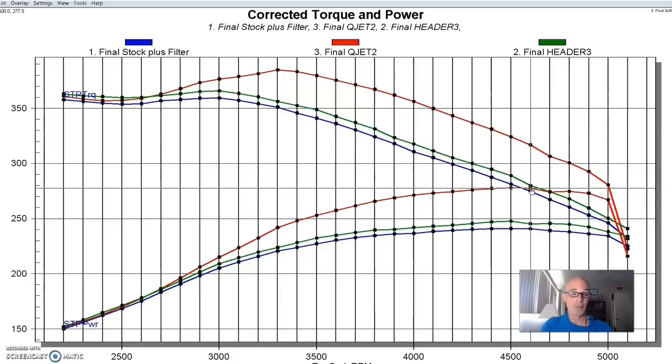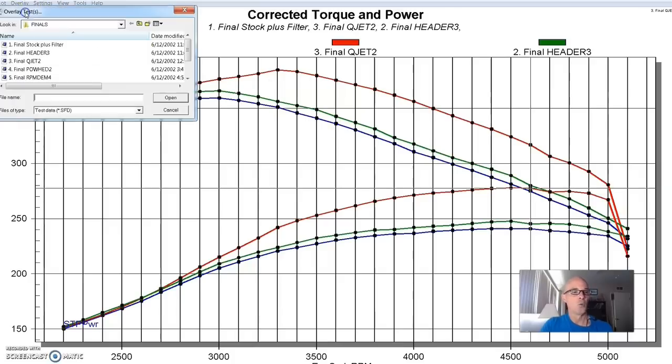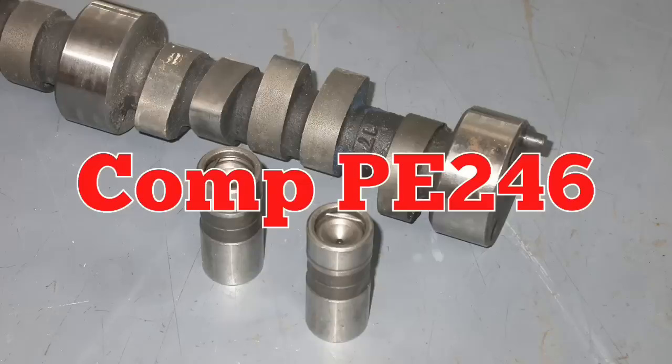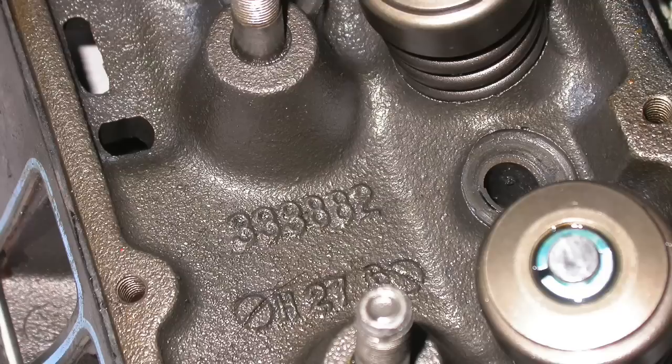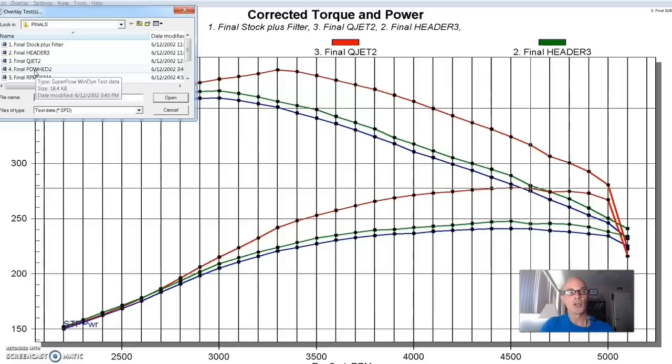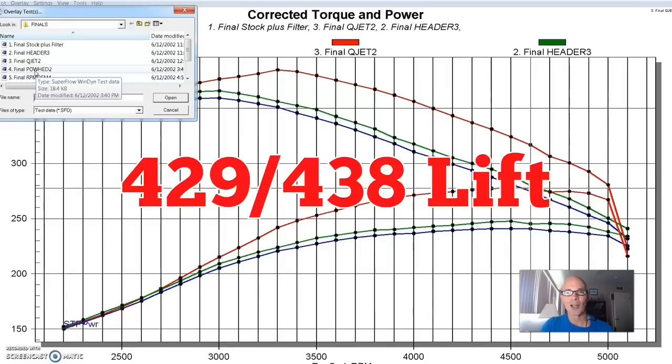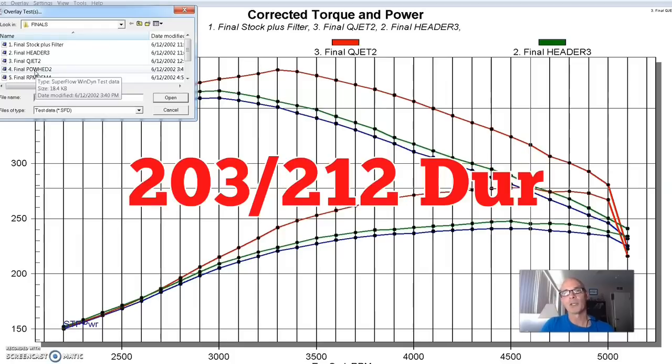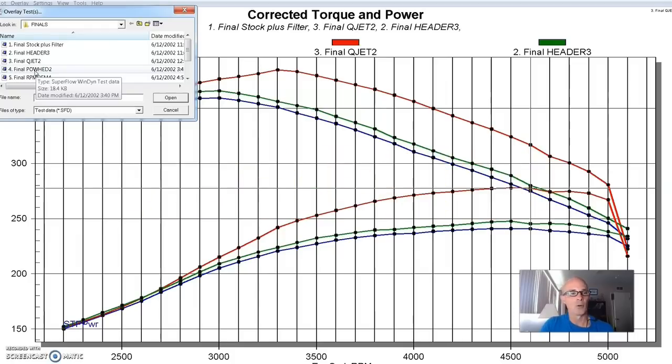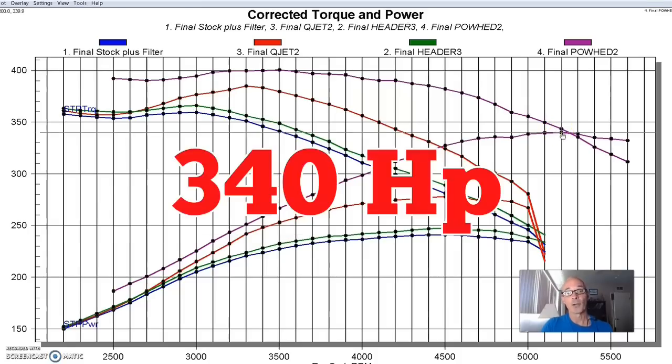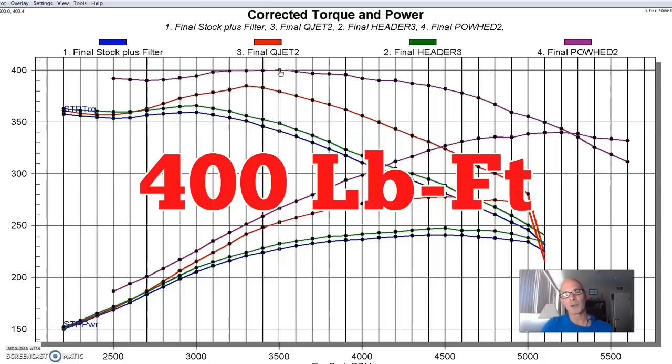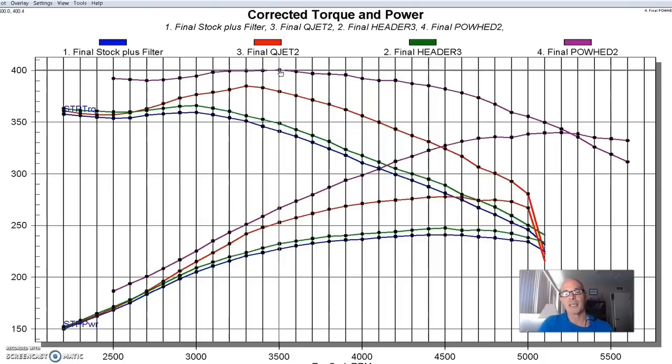So the next modification on our mild combination was to install a set of ported heads and a mild cam. What we did was install ported versions of the 882 heads. I would recommend milling these, which we didn't do. It would be a good idea, but we also installed a PE246, basically an RV cam. So this is a combination that would go together for a guy that wanted a 350 for towing or kind of a street application. As you can see, the ported heads and camshaft picked up power quite a bit, even though it's a very mild cam. It's actually an emissions legal cam too, which is important to note. 340 horsepower and torque was up to 400 foot pounds. So you guys are probably wondering, well, how much of this is the cam and how much of this is the heads?